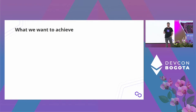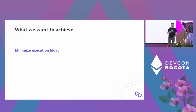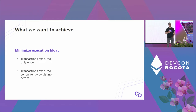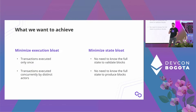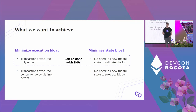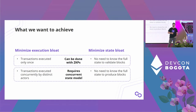What is the ideal solution? We want to minimize execution bloat, meaning we want to execute each transaction only once, and we don't want the same block producer to execute all transactions — we want distinct actors in the network that can execute transactions. We also want to minimize state bloat, meaning we don't want to enforce the condition that you need to know the full state to validate or produce new blocks. ZKPs can give us the first two properties via a proof of execution, but to achieve the other two you need something else — what I call a concurrent state model.